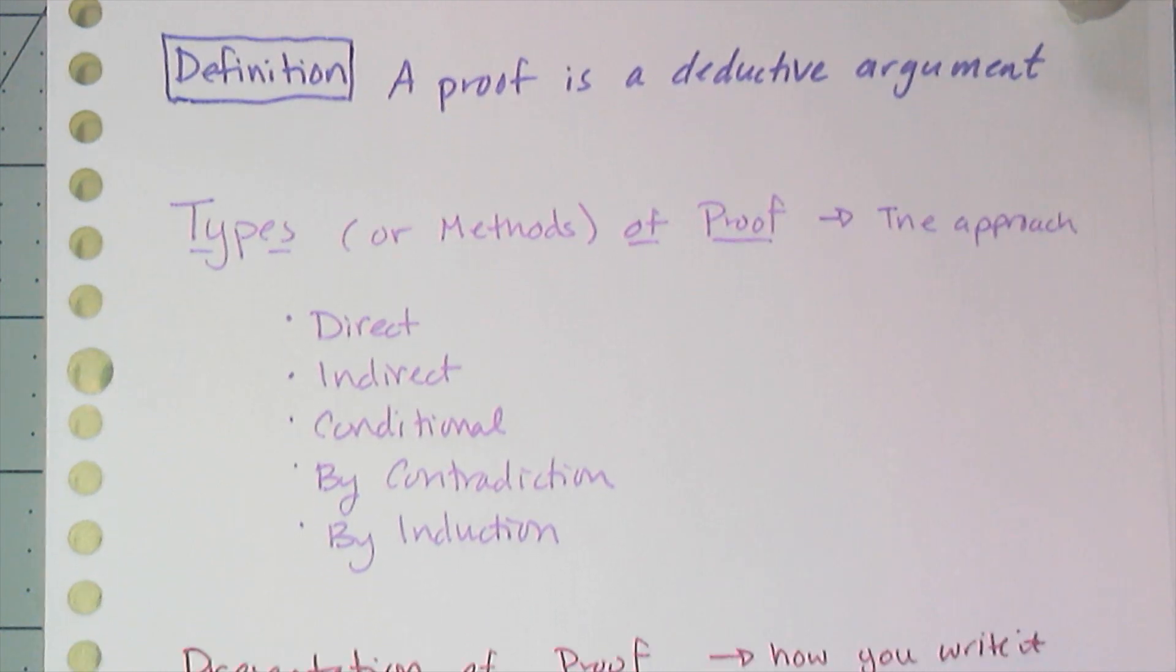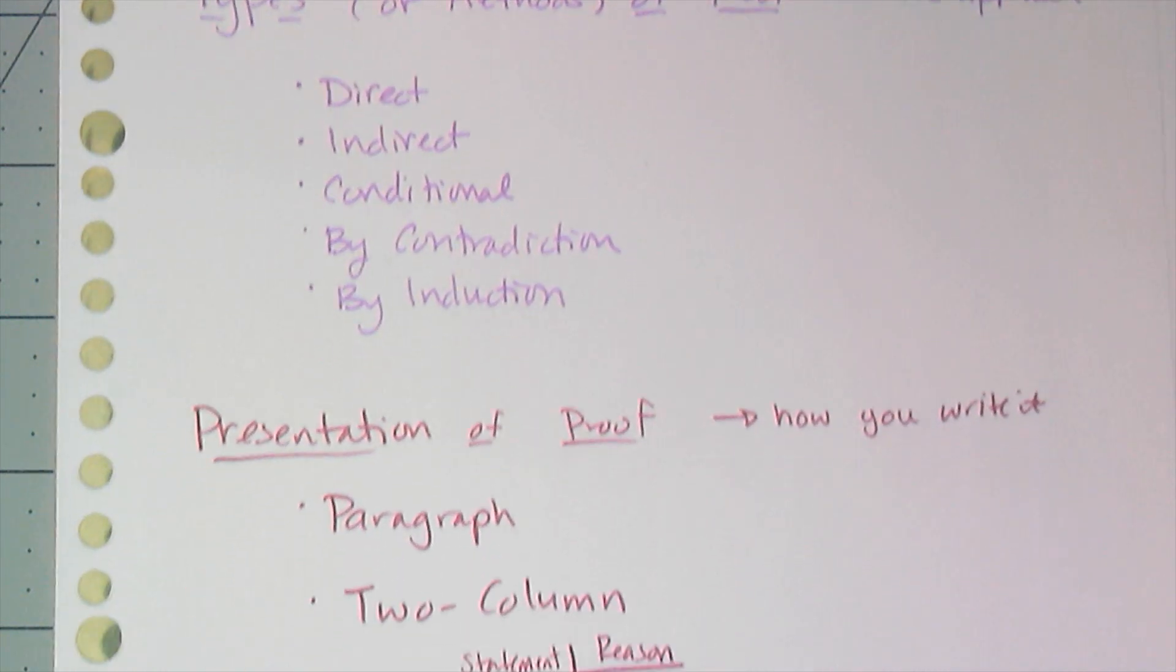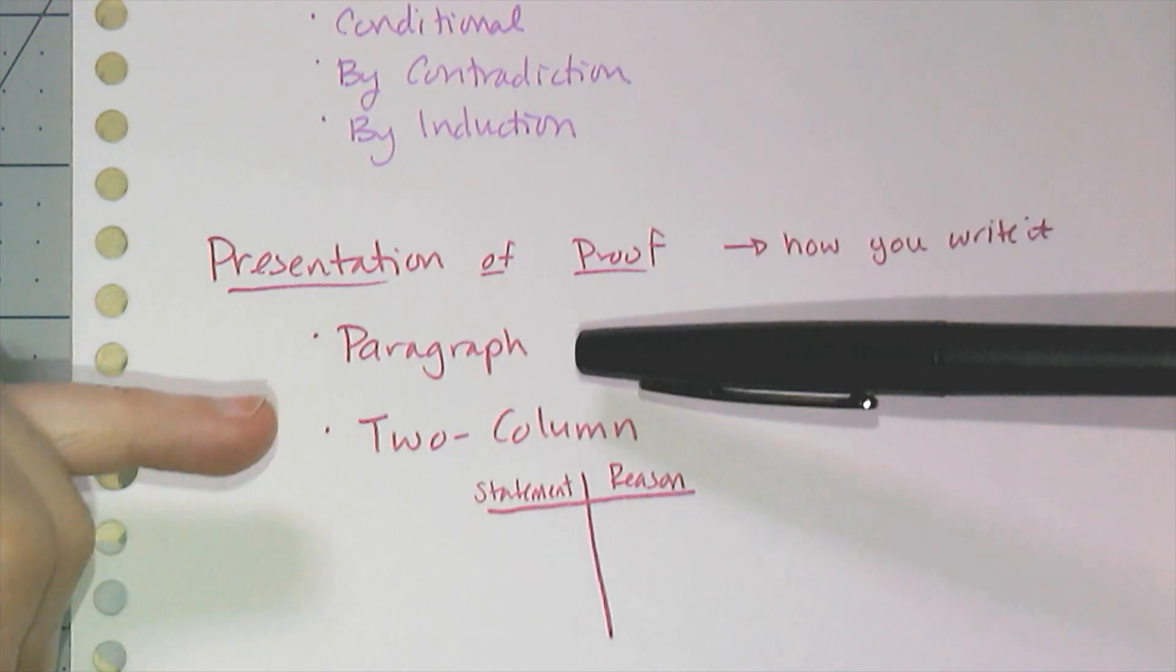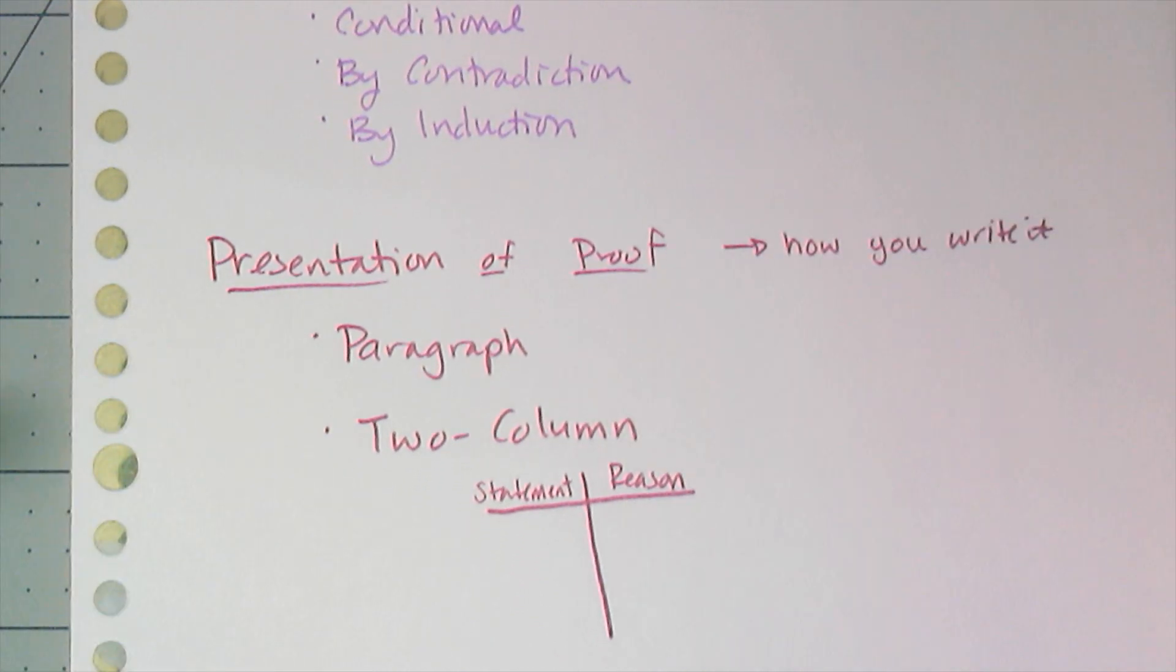Now when you write a proof you can choose how you present it to other people, right? So you can write a paragraph proof, which is just like sentences. You have to think of it as if you're going to have a conversation with somebody, what would you say to prove your point? And that's basically what a paragraph proof is.